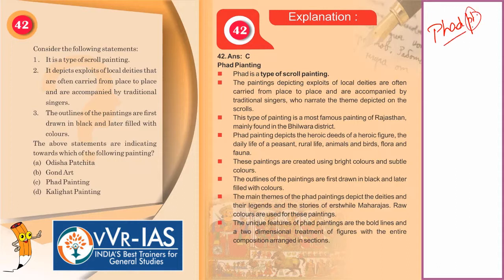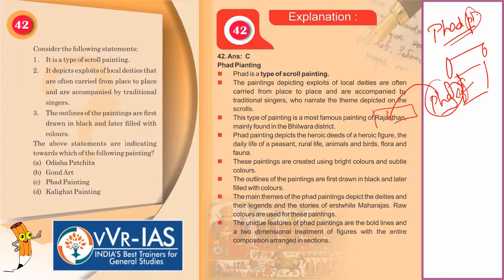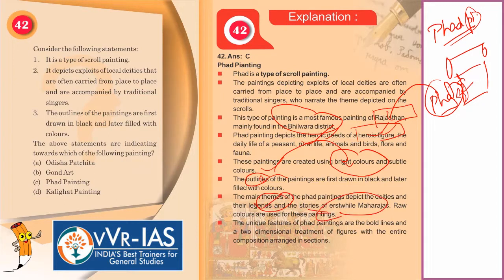The description in the question is talking about Phad painting. Phad painting is a scroll which has a piece of canvas called a Phad. These paintings are famous in Rajasthan, especially in the Bhilwara district. They depict the heroic deeds of local heroic figures using bright and subtle colors. The outlines are first drawn in black and then filled with colors. Main themes depict deities, their legends, and stories of erstwhile Maharajas. The unique feature is bold lines and two-dimensional treatment of figures with the composition arranged in sections.